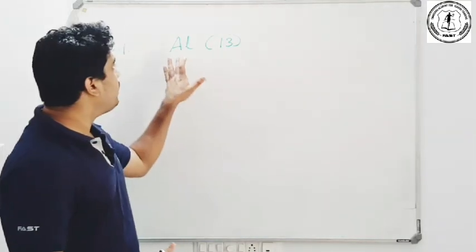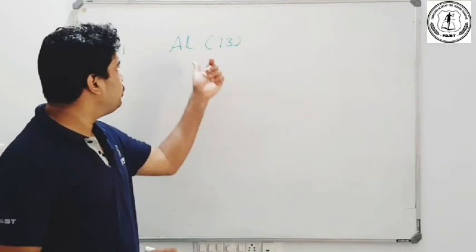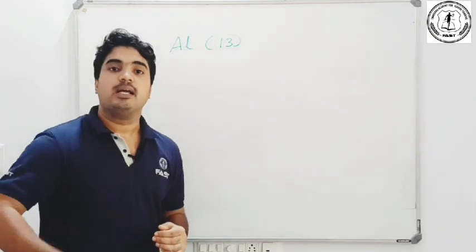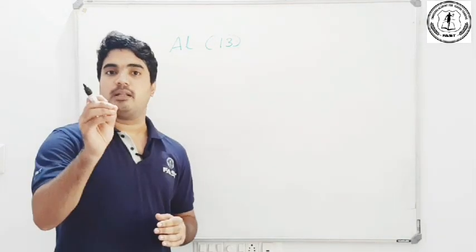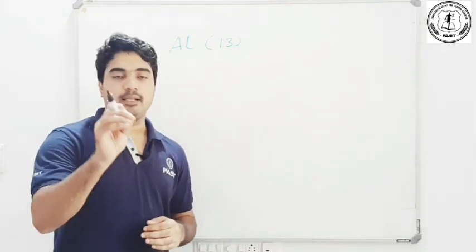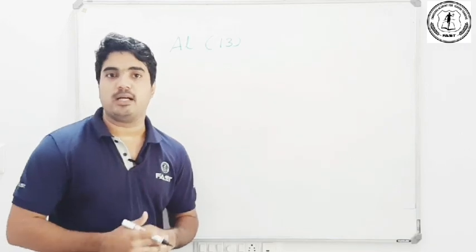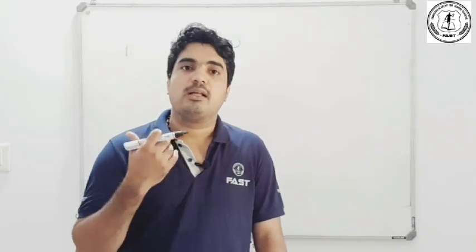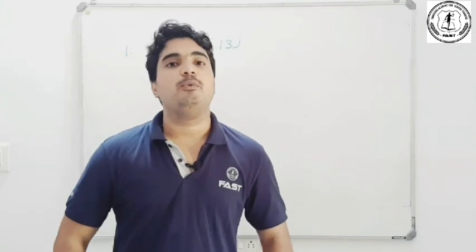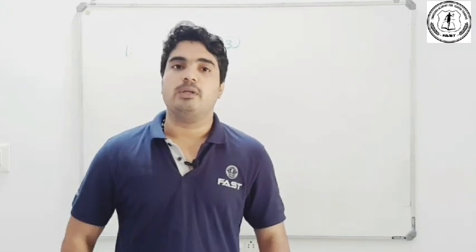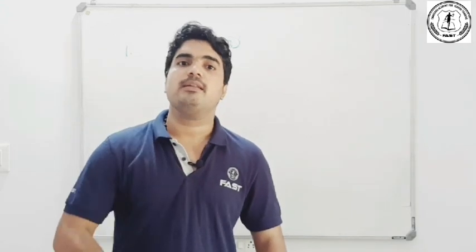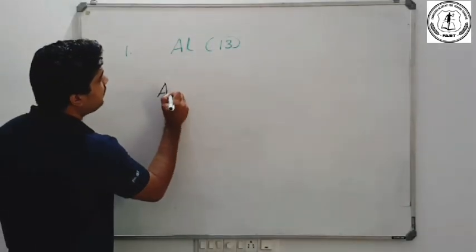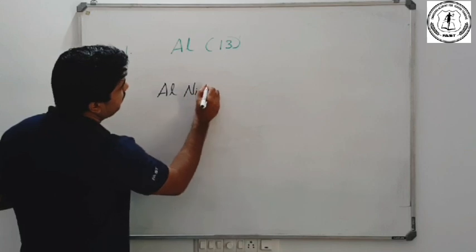Let's take a look at the periodic table. That is Aluminium. If it's aluminium, it's aluminium. This is Al-Nico — an alloy. We can add a few of these things together.